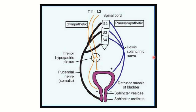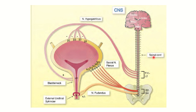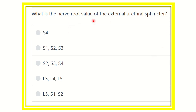Welcome to another session for answering questions for the MRCS exam. The question is: what is the nerve root value of the external urethral sphincter? The options are: sacral 4; sacral 1; sacral 2 and sacral 3; sacral 2, sacral 3 and sacral 4; lumbar 3, lumbar 4 and lumbar 5; or lumbar 5, sacral 1 and sacral 2.